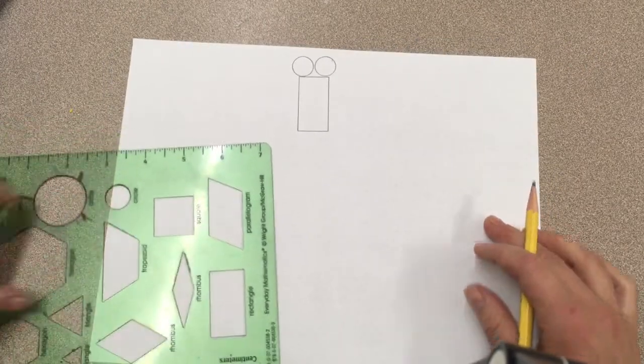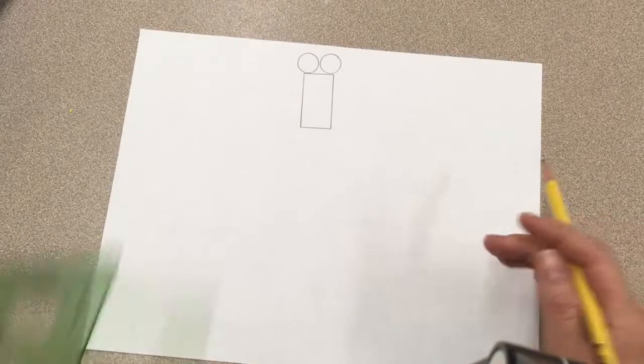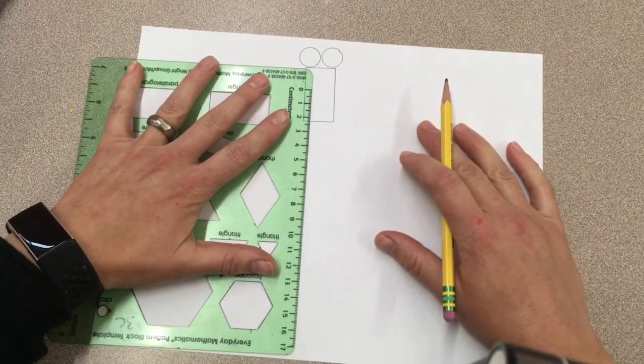Then I'm going to make a longer rectangle, a little bit smaller for the body. For this I'm just going to use a straight edge.